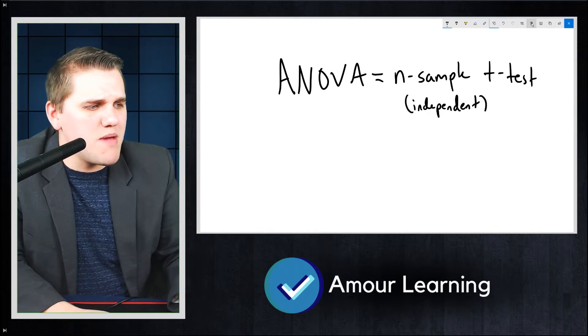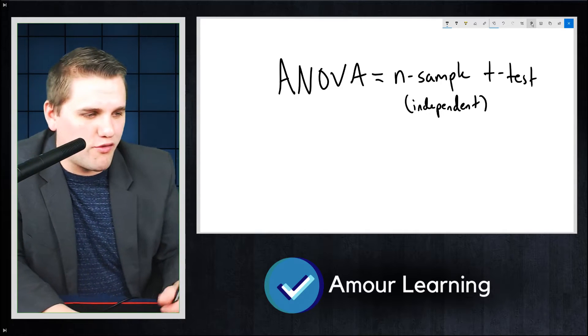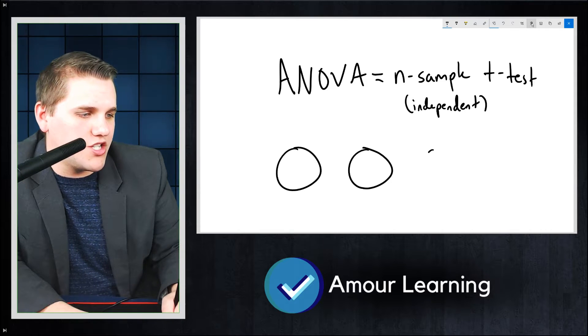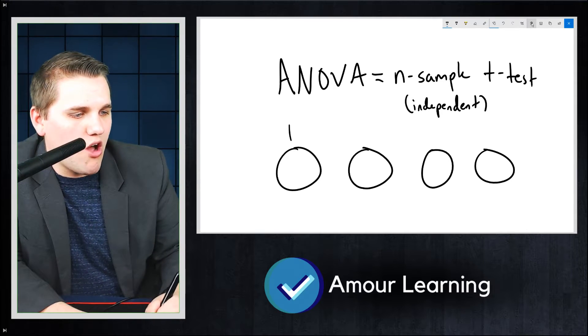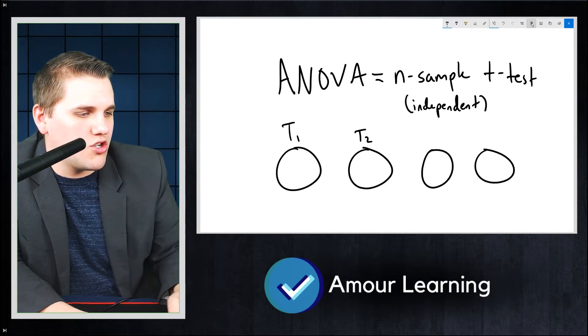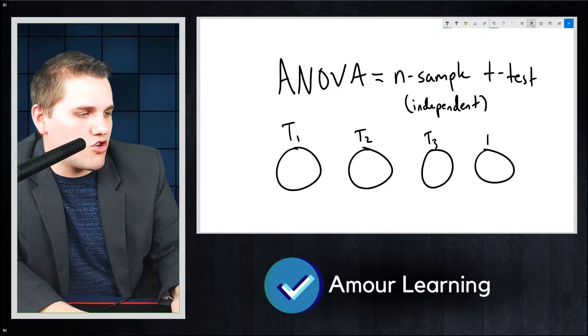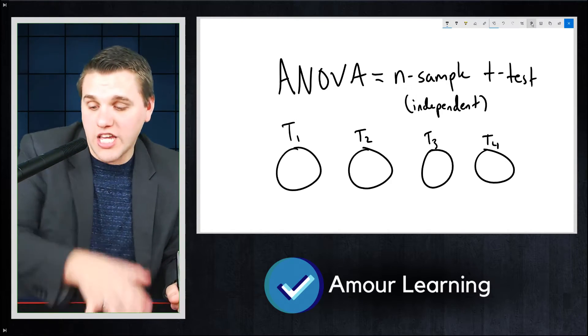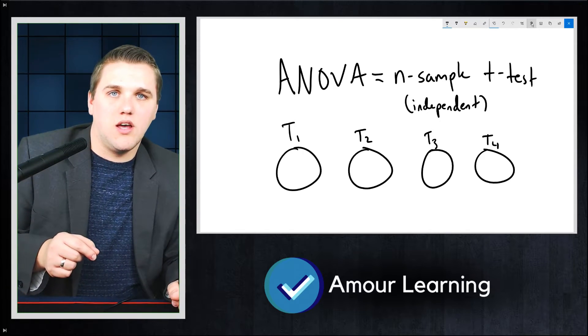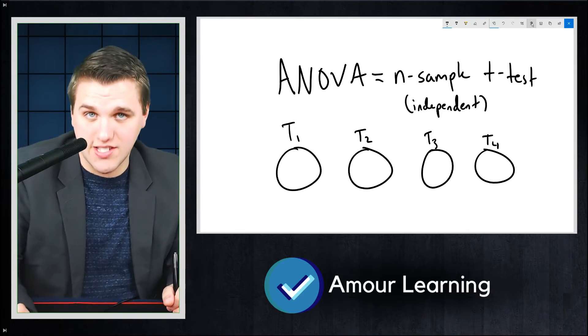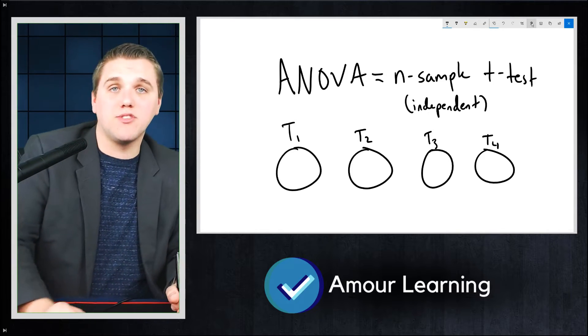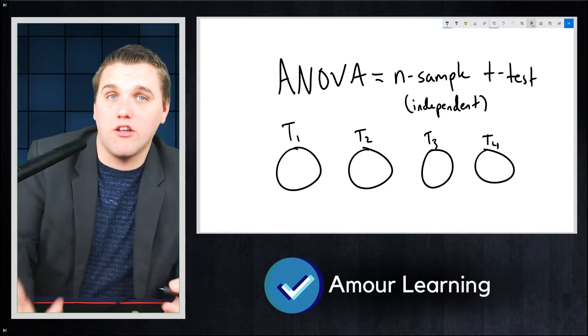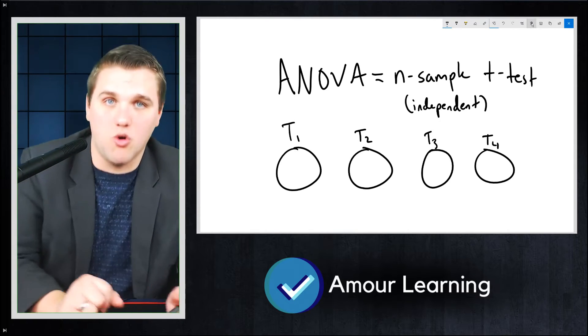What do I mean by n-samples? Where is this useful? For example, let's say you have four different teaching methodologies, and we're going to call this treatment one, treatment two, treatment three, and treatment four. You want to know, does your teaching methodology influence the results of a certain test? So you have four independent samples and four different teaching methodologies, and you want to know, does teaching methodology in general influence test scores?